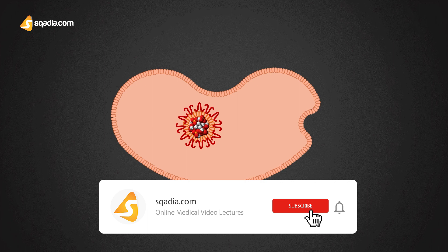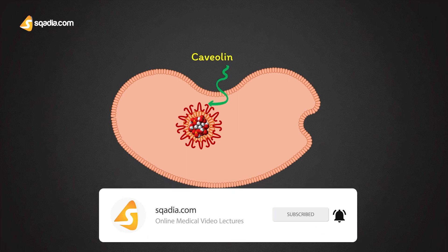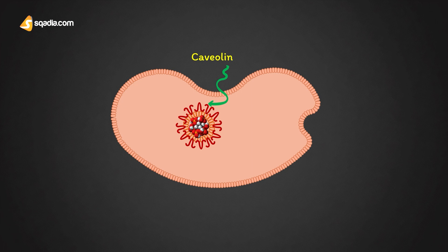Transcytosis involves the receptor-coated pits, as in the case of receptor-mediated endocytosis. The receptor protein coating the pits in this process is caveolin and not clathrin.